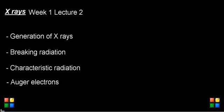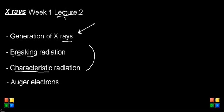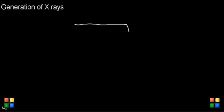Welcome. This video is going to talk about x-rays from the second lecture of the first week. We all want x-ray vision, so the first step to getting that is understanding how x-rays are generated. The two main mechanisms are breaking radiation and characteristic radiation. We'll also go through the Auger electron concept.